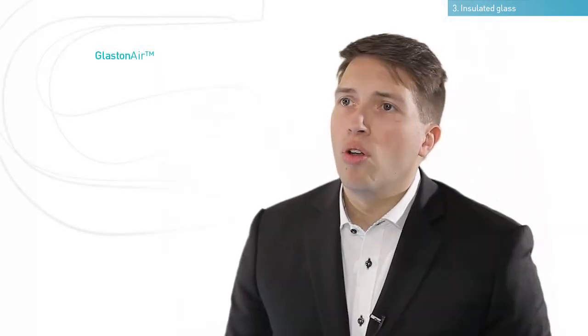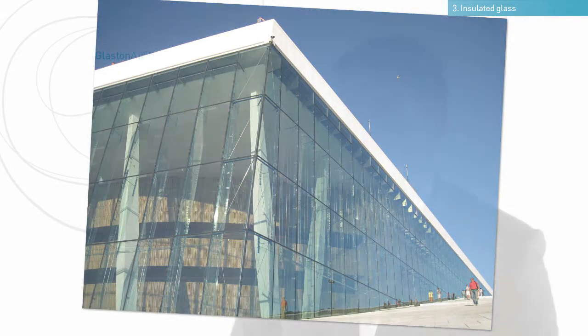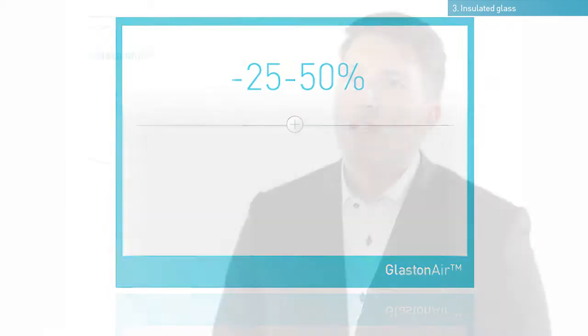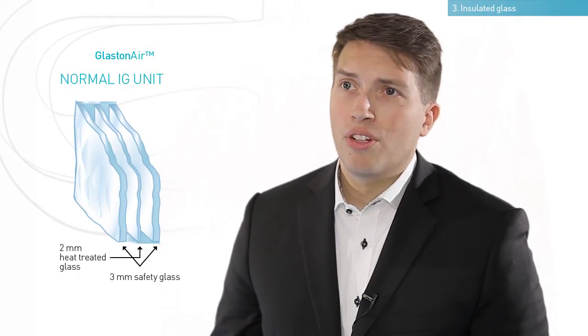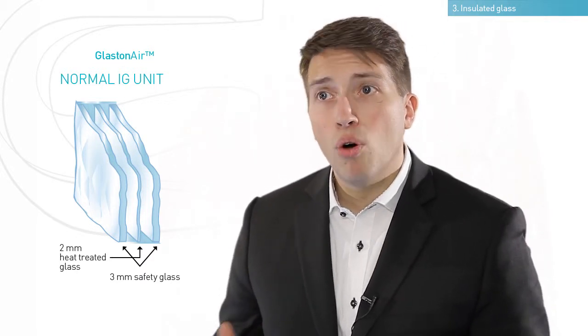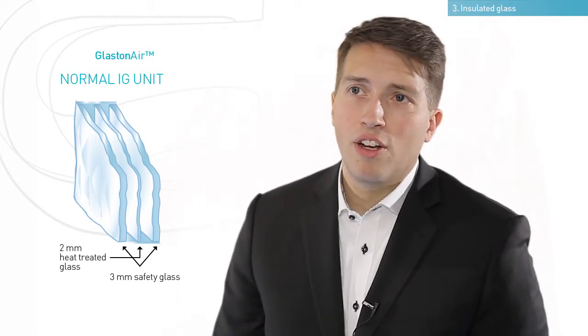The demand for lower weight construction is especially evident within insulated glass units. With Glaston air, a simple example would be using 2mm safety glass instead of 3mm or 4mm to drop the unit weight significantly. A much-discussed combination for the insulated glass unit is to use 3mm safety glass on both sides of the unit, with the middle pane being 2mm non-safety glass.